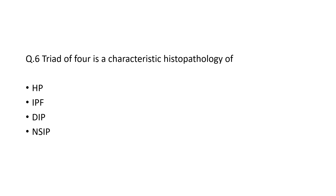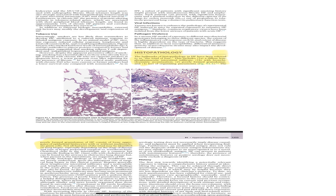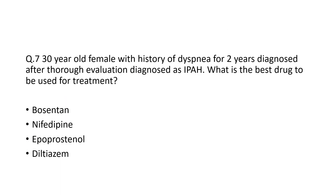The Triad of IV is a characteristic histopathology of which condition — hypersensitivity pneumonitis, IPF, DIP, or NSIP? This question must have been given by someone reading Murray and Nadel. The screenshot from Murray and Nadel shows that the hallmark histopathology in HP is referred to as the Triad of IV, including a diffuse lymphoplasmacytic interstitial infiltrate with bronchiolocentric accentuation, poorly formed granulomas, and foci of organizing pneumonia. So the answer is HP.